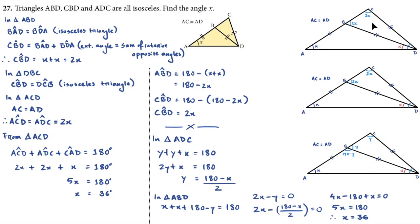In triangle DBC, angle CBD is equal to angle DCB, because CD equals BD making it isosceles. So if CBD is 2X, then DCB is also 2X — both base angles of triangle BCD equal 2X.